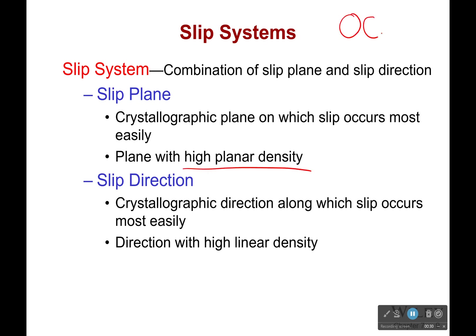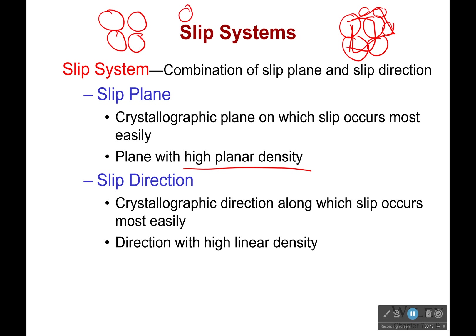If I'm thinking about my simple cubic structure, the close-packed plane is not the diagonal because there's actually lost space in between. It would be any of the faces, because in those faces I have atoms that are touching as much as they can. If I go from a diagonal, I've got atoms touching up and down but there's a big gap in between. Now a slip direction is a crystallographic direction along which slip occurs most easily — the direction with the highest linear density.